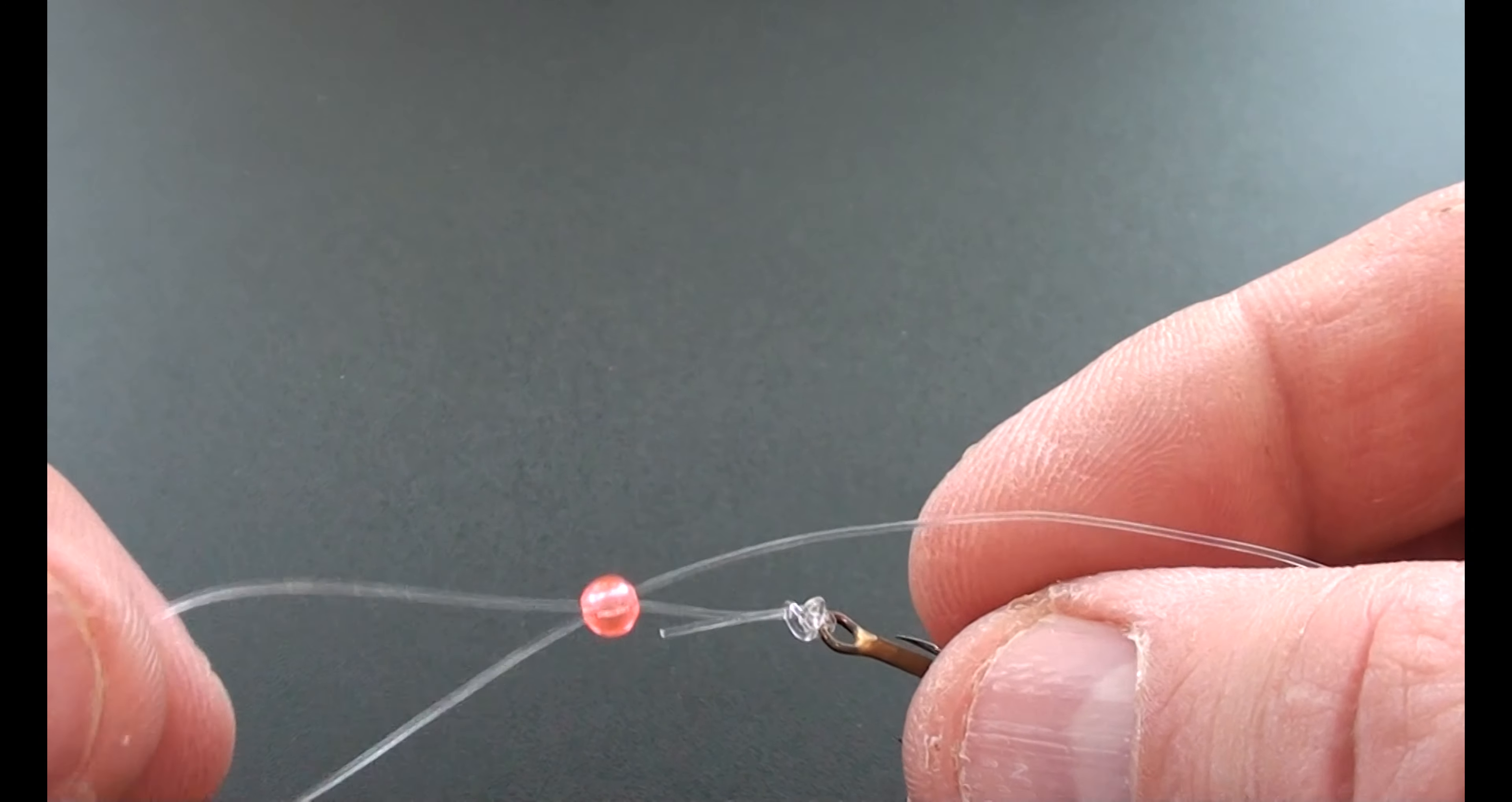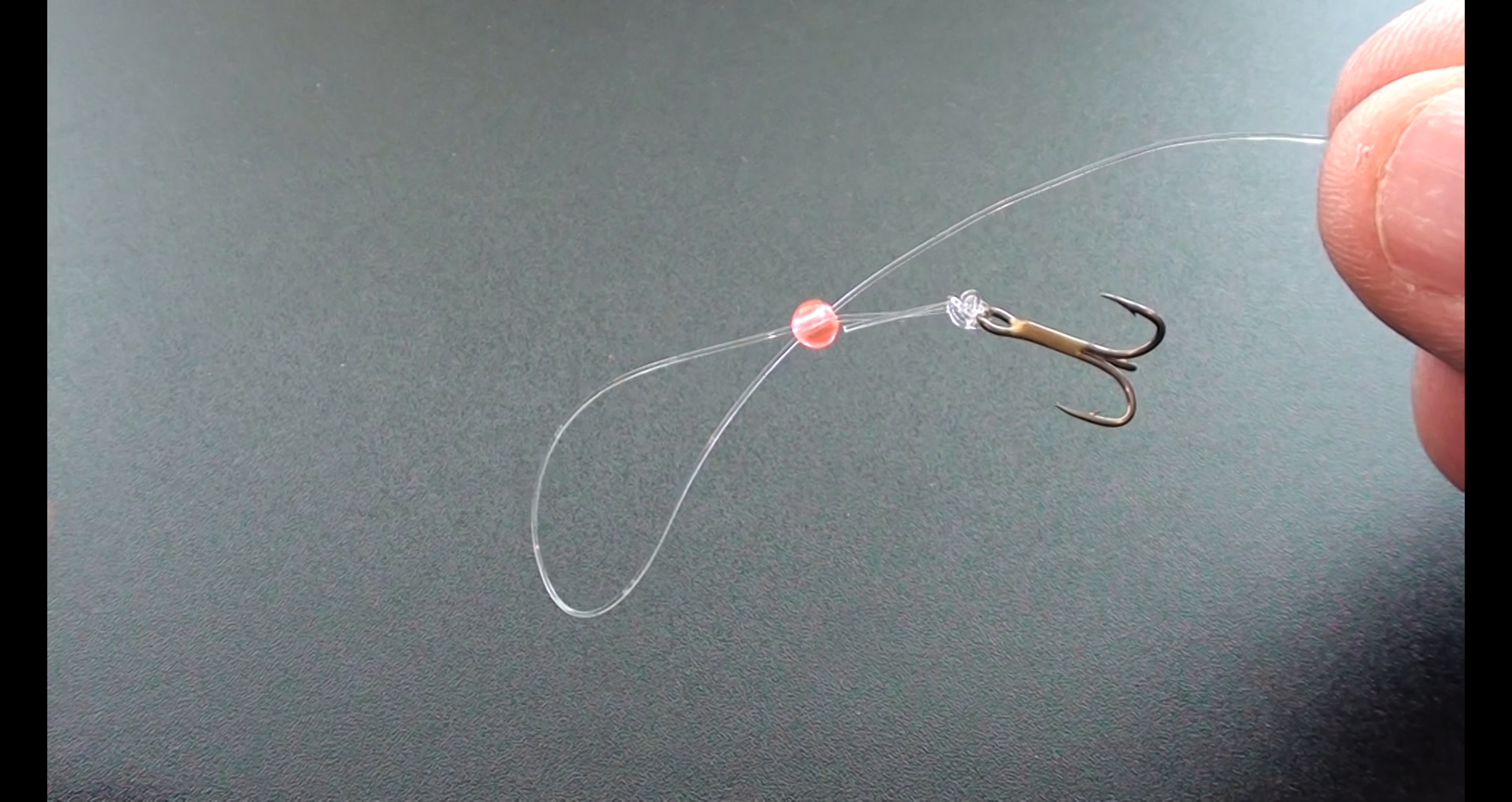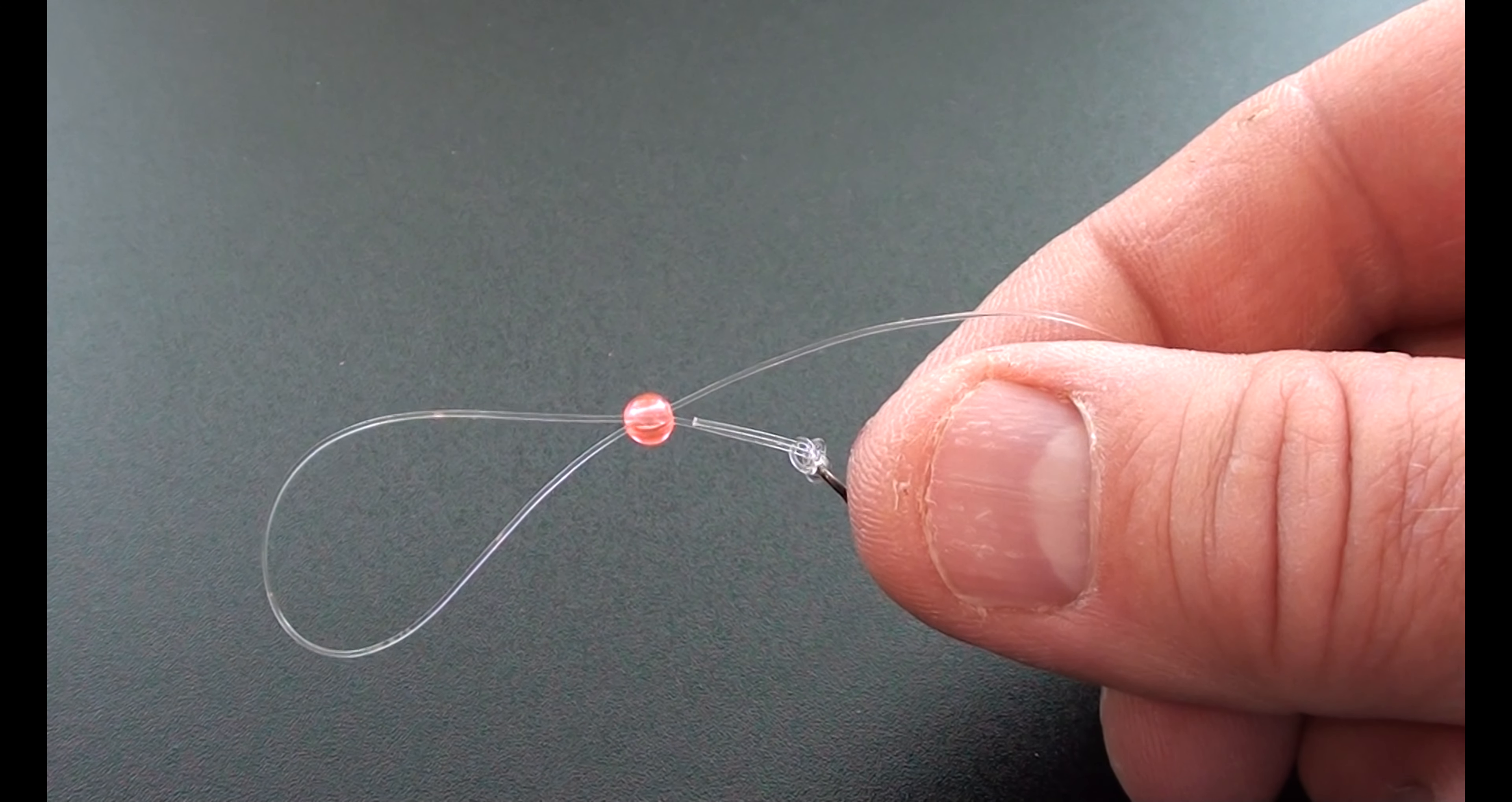So now that we've got the knot tied we're going to run the tag end of the line through our bead and then back through our bead again from the same side. So that we form a large loop like you're seeing here with the tag end just sort of hanging free.